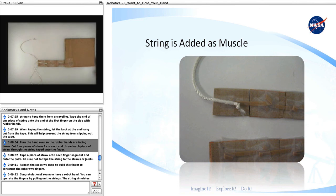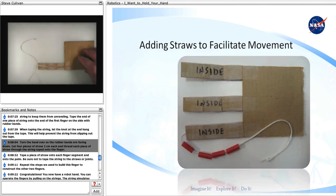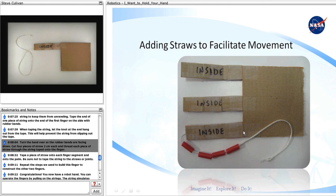Turn the hand over so the rubber bands are facing down. Cut four pieces of straw two centimeters each and thread each piece of straw through the string taped onto the finger.